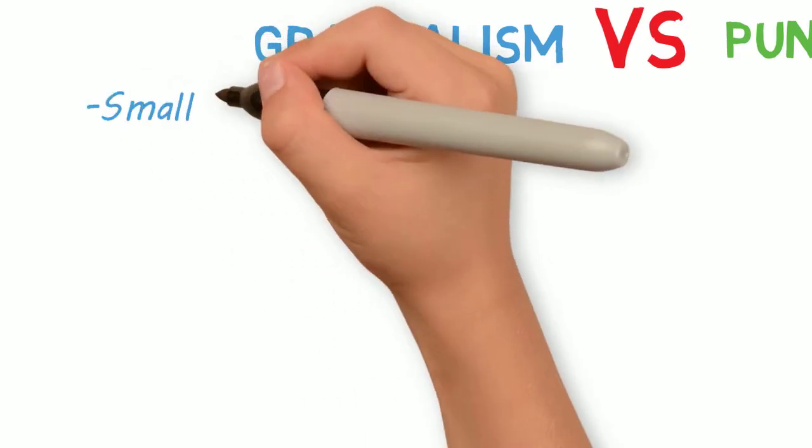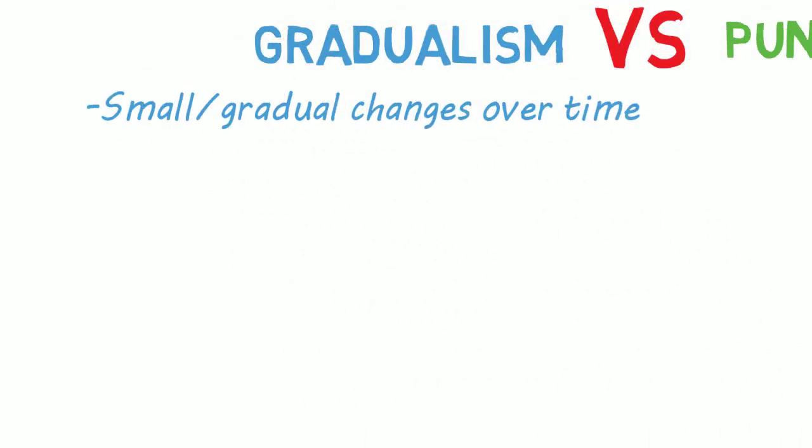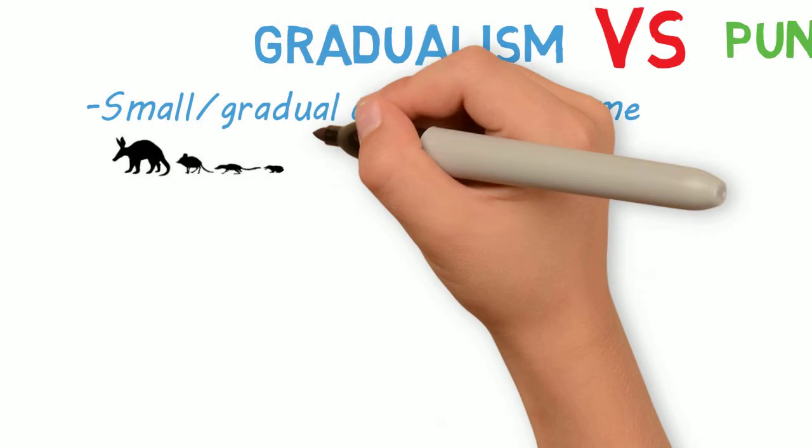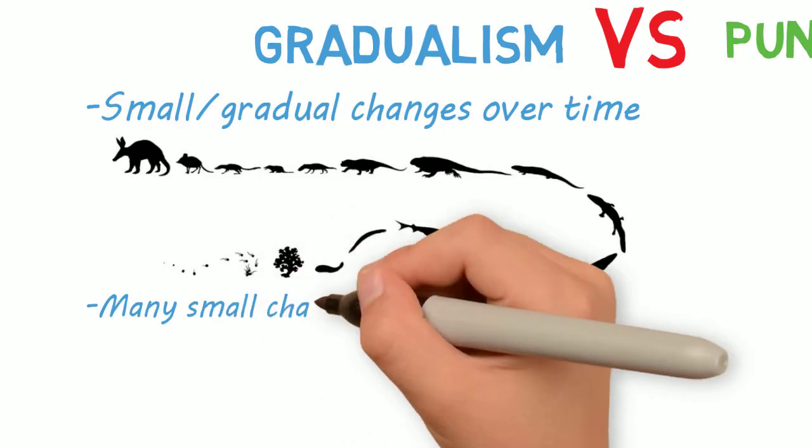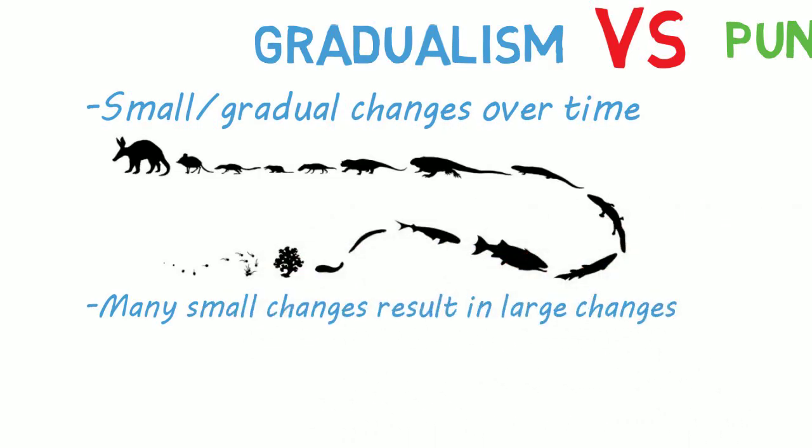First we'll talk about gradualism, which is small changes in evolution over time. Small changes occur gradually and these small changes can add up to result in large evolutionary changes within a species or between species.